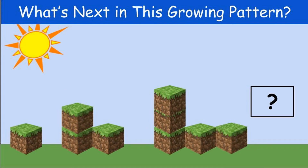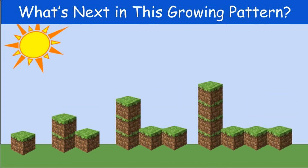Here is our next example of a growing pattern. Take a look at this Minecraft box and see if you can figure it out. If you check out the fourth picture you'll see if you got it correct. You'll notice that the tower starts off with one and then goes to two, three, and four. Then you have to add another block going to the right of the stack — so there's none in the first picture, one in the second picture, then two, and then three.